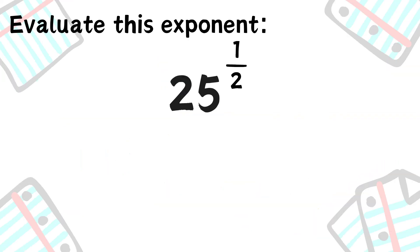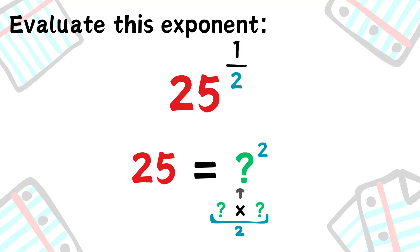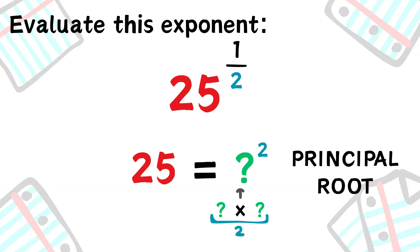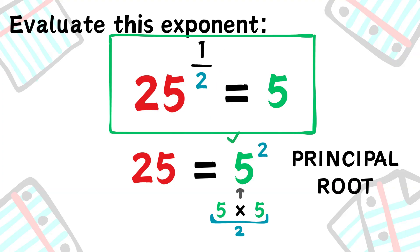Let's practice. What is 25 to the power of 1 half? What number, when multiplied twice, equals 25? The principal root of 25 is 5. So 25 to the power of 1 half is 5.